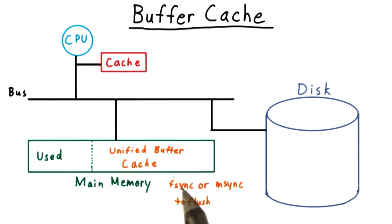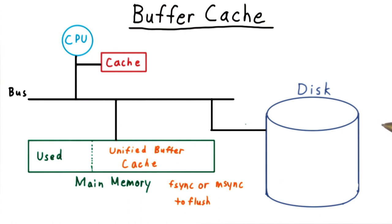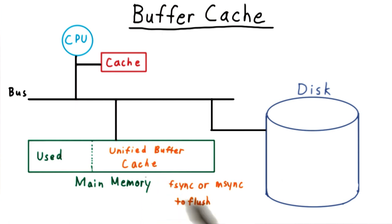If you really do want to make sure that changes are reflected on disk, you need to call fsync or msync to flush out the unified buffer cache. The write-back policy of the buffer cache is also the reason that operating systems will warn you not to remove storage devices without ejecting them first — it needs a chance to flush the buffer cache of any dirty pages so that changes will be reflected on the device.